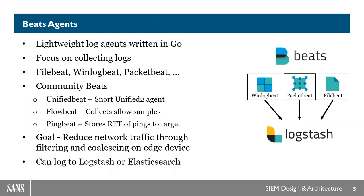How do logs on the edge get sent in? You can use typical Linux mechanisms like Syslog, but Elastic also has their own log agents called Beats — separate Beats for each type of data you want to collect. The most important for security are WinLogBeat for Windows logs, PacketBeat for network data, and FileBeat for tailing log files across the network. You can also build your own Beats, and some already exist like UnifiedBeat for SNORT Unified 2 format, FlowBeat for SFlow, and PingBeat. The goal is to reduce network traffic through filtering and coalescing on the edge device.